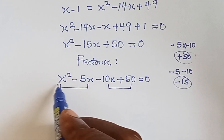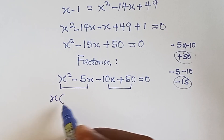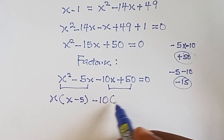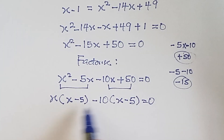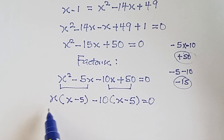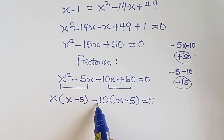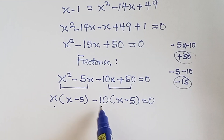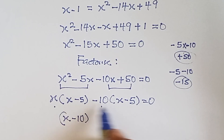Grouping the first pair gives x times x minus five, and the second pair gives minus ten times x minus five. Expanding to verify: x times x is x squared, x times minus five is minus five x, minus ten times x is minus ten x, and minus ten times minus five gives plus 50.